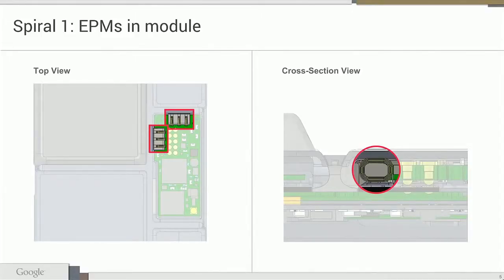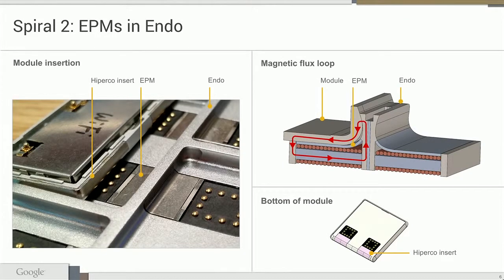In Spiral 1, we had the EPMs in the modules, and we got feedback from developers that it was very inconvenient to have to include these EPMs, a driver circuit, and parse commands for them. So in Spiral 2, we made a change — the EPMs are now in the endo. You can see a photo of the Spiral 2 endo with the EPMs. The magnetic field comes out from the spine and goes through a hyperco insert in the module. Hyperco is a material that can take a very large amount of magnetic flux, so it can be attracted very strongly to a magnet.